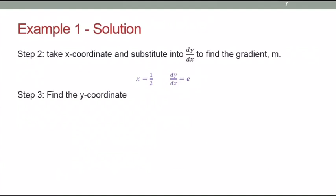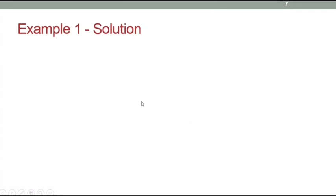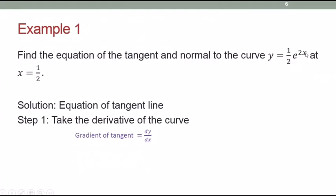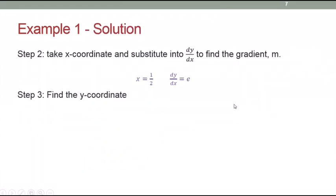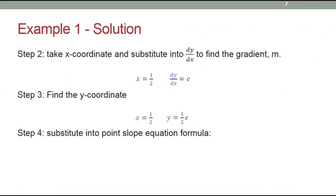Step 3: find the y-coordinate. You already have x = 1/2. Substitute it into the original equation y = (1/2)e^(2x). When x = 1/2, you get y = (1/2)e^(2 × 1/2) = (1/2)e. So the y-coordinate is 1/2 · e. What is the formula for the tangent equation?